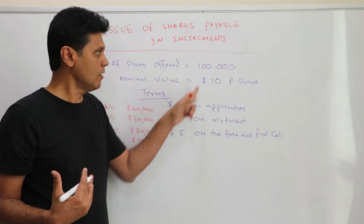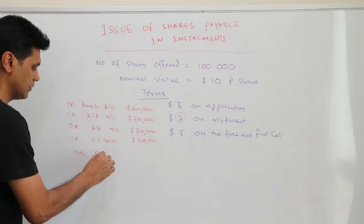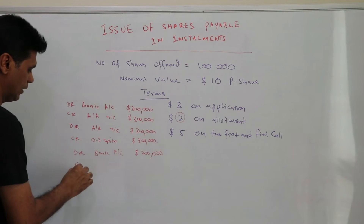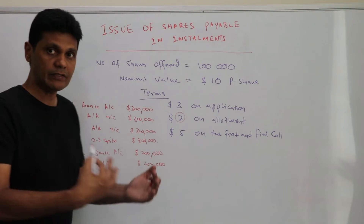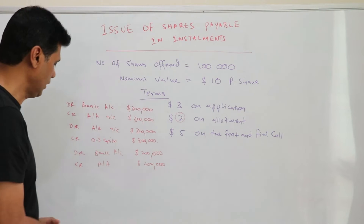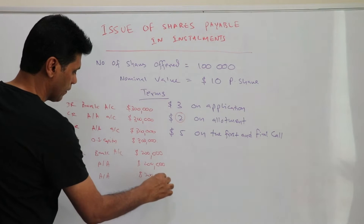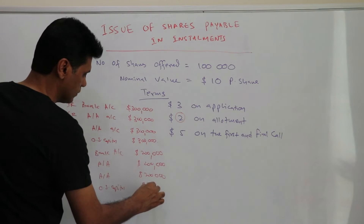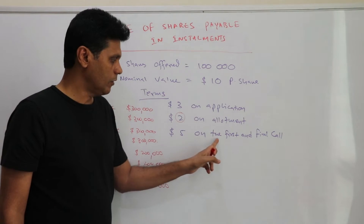The second installment is $2 on allotment of shares. The company receives $2 per share on 100,000 shares, so debit bank account $200,000 and credit application and allotment account $200,000. This amount is then transferred to the ordinary share capital account: debit application and allotment account $200,000 and credit ordinary share capital account $200,000.